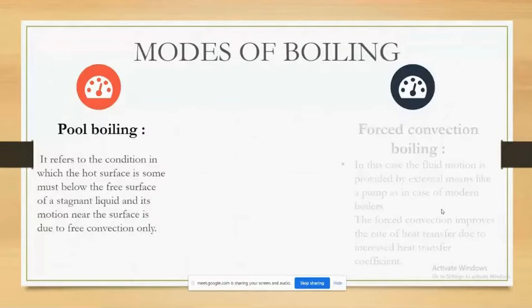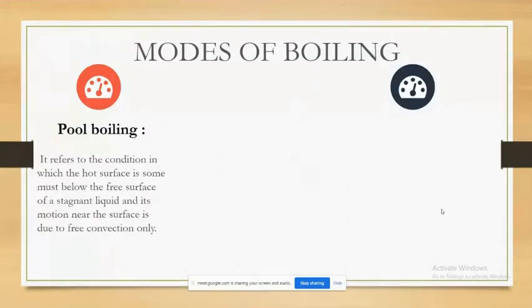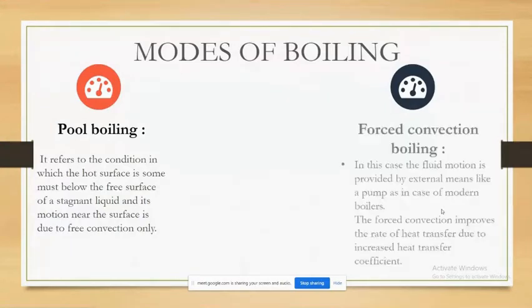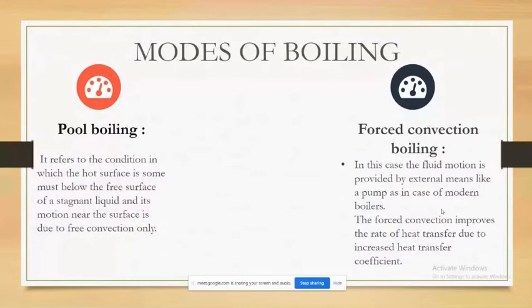Myself Harsimran. Now let's know about some modes of boiling. Pool boiling refers to the condition in which the hot surface is submerged just below the free surface of a stagnant liquid and its motion near the surface is due to free convection only. Forced convection boiling — in this case, the fluid motion is provided by external means like a pump, as in modern boilers.